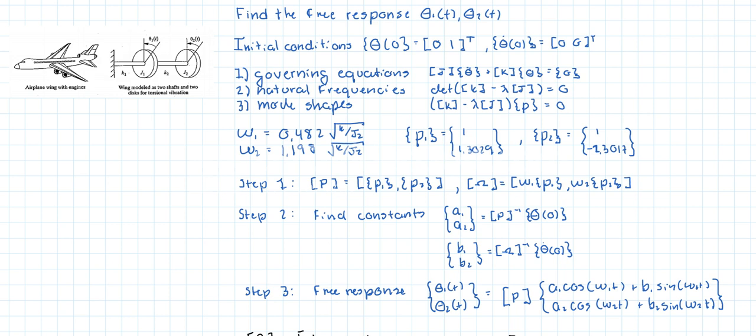In previous videos, what we did is that we started by finding the governing equations, which gives us some inertia matrix times the acceleration vector plus the stiffness matrix times the displacement vector, which is equal to the zero vector. Then we found the natural frequencies by setting the determinant of the stiffness matrix minus some eigenvalue lambda times the inertia matrix equal to zero. We solved for lambda.